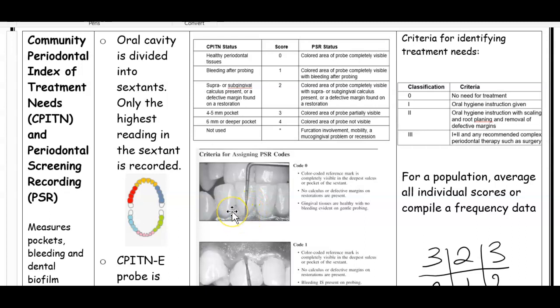If I probe an area and get a code of zero, that means the band is completely visible, there's no calculus or defective margins, no overhangs or bad restorations, and the gums look healthy. If the gums look healthy, there's no bleeding and no calculus, you give a score of zero. If this was section five, I would put zero for section five.